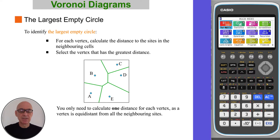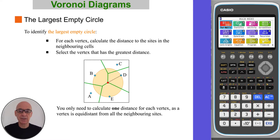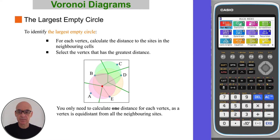To identify the largest empty circle, for each vertex, calculate the distance to the sites in the neighbouring cells. So for the top vertex, calculate the distance to sites B, C or D, as shown. For the middle vertex, calculate the distance to sites B, D or E. And for the bottom vertex, calculate the distance to sites A, B or E. You only need to calculate one distance for each vertex, as the vertex is equidistant from all its neighbouring sites. Then select the vertex that has the greatest distance.